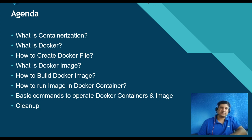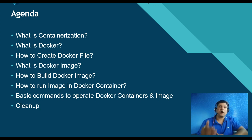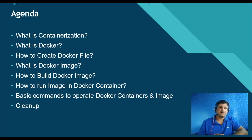We'll understand what is Docker, what is a Docker container, what is a Dockerfile, how can we create a Dockerfile, and what instructions go into a Dockerfile. Then we'll understand what is containerization, what is a Docker image, how can we create a Docker image, then we'll see how to run the Docker image into a container, test that image and test our application in the browser, and then conclude with the summary.